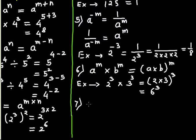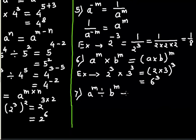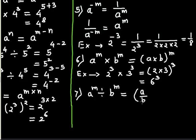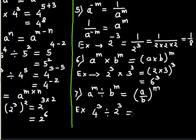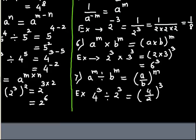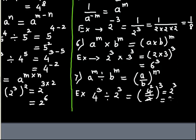The 7th law is: if the bases are different, exponents are the same, and there is a division sign in between them, then you write it as a over b in parenthesis with the common exponent m. For example, 4 cubed divided by 2 cubed becomes 4 over 2 in parenthesis raised to 3. You can cancel, giving 2 cubed, which is 2 times 2 times 2, and your answer is 8.